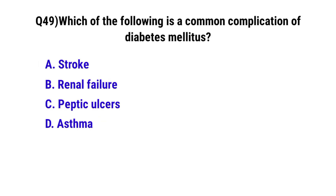Question number 49: Which of the following is a common complication of diabetes mellitus? The correct option is B: Renal failure.